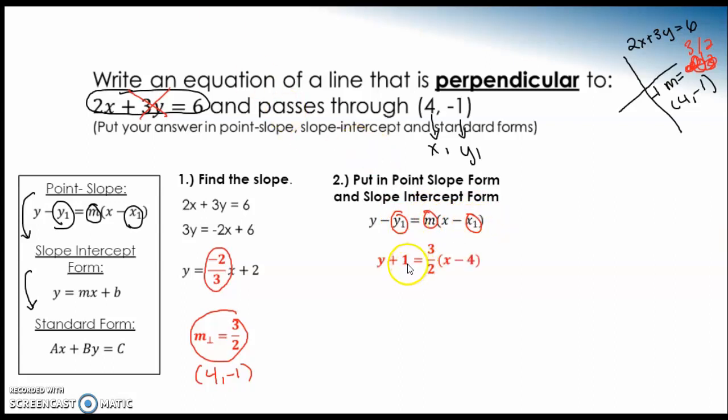Okay. So we're going to fill everything in. Now that became a positive 1 because we had y minus negative 1 from right here. 3 halves, x minus 4. So now every single solitary time that we go from point slope form to slope intercept form, you're going to do the same thing. You're going to distribute and then add or subtract whatever is next to y.